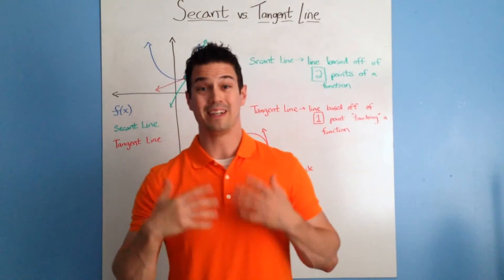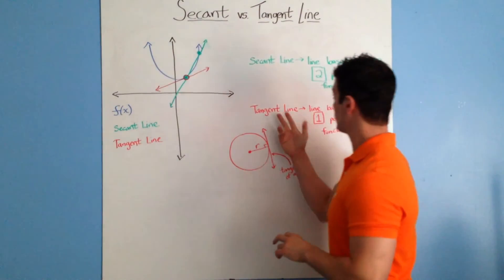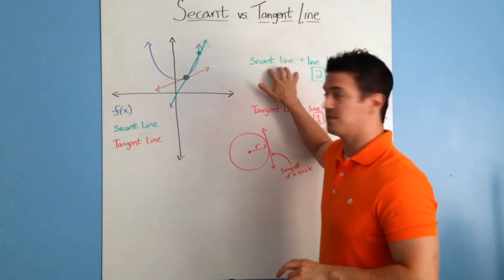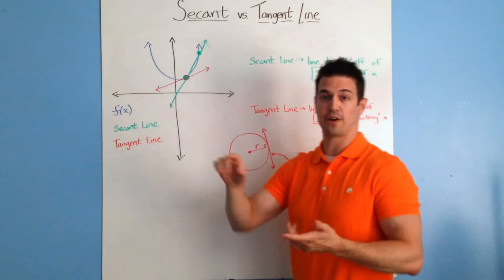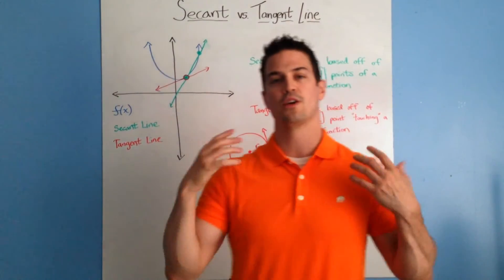What we need calculus to do is - we can easily figure out the equation for a secant line with two points. You can figure out the slope, the slope-intercept, and make an equation.